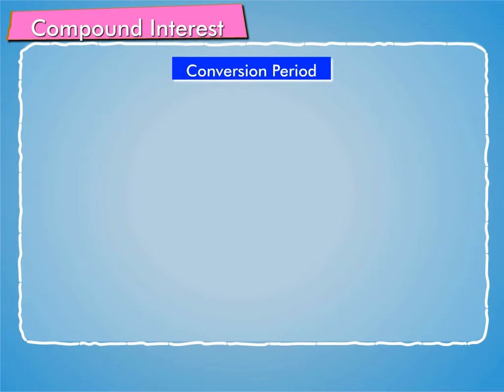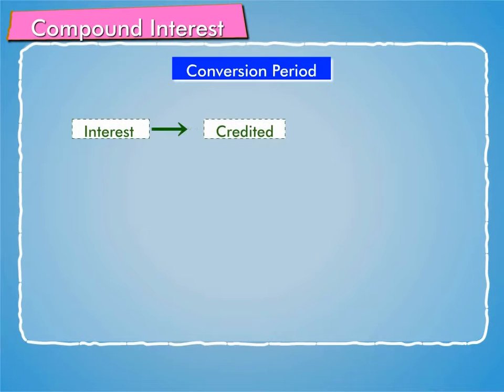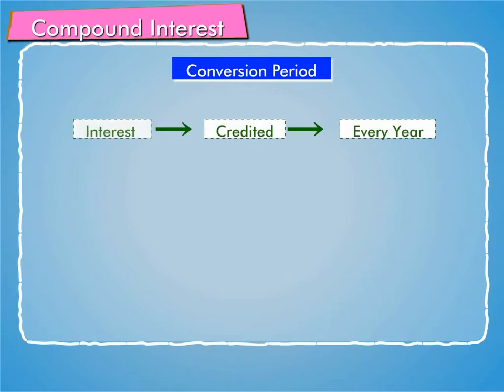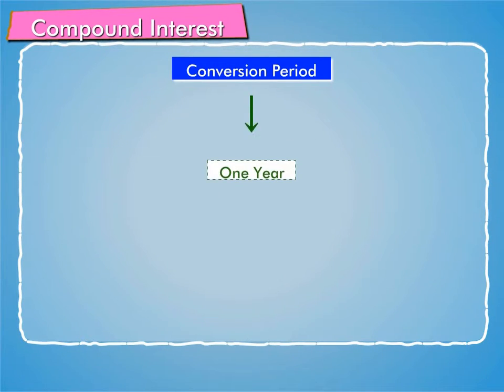Conversion period. In the examples discussed so far, the interest was credited after every year. So, the conversion period was one year.